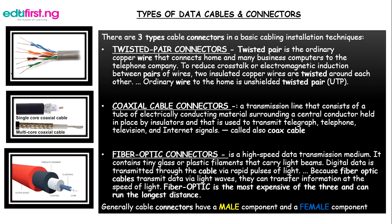Fiber optic connectors: fiber optic is a high-speed data transmission medium containing tiny glass or plastic filaments that carry light beams. Digital data is transmitted through the cable via rapid pulses of light, so fiber optic cables can transmit information at the speed of light. Fiber optic is the most expensive of the three but can run the longest distances. Most ISPs supply internet via fiber optic cables to cover long distances and increase durability and speed — as we move from 2G toward 5G, fiber optics increase our internet connectivity speed.